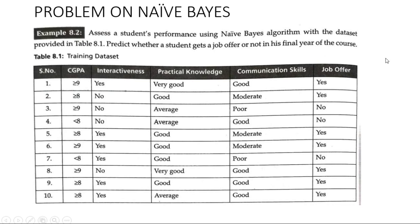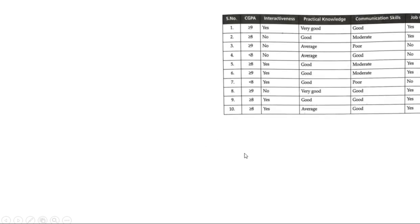This is a given training dataset for a student's performance. We have to apply the Naive Bayes algorithm and predict whether a student would get a job offer or not. The first step is to compute the prior probability. Our target feature is the job offer column, which is in the last column.